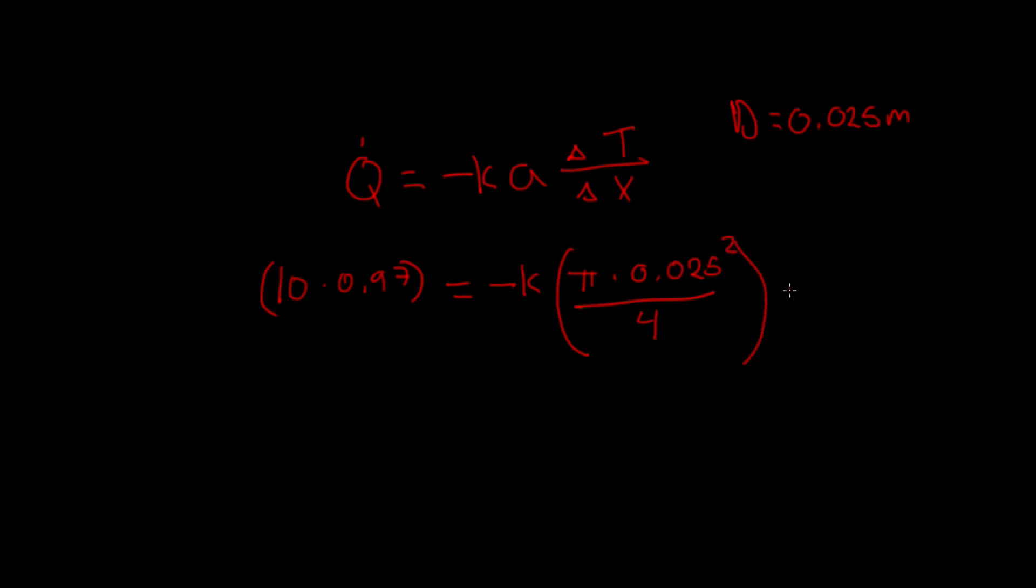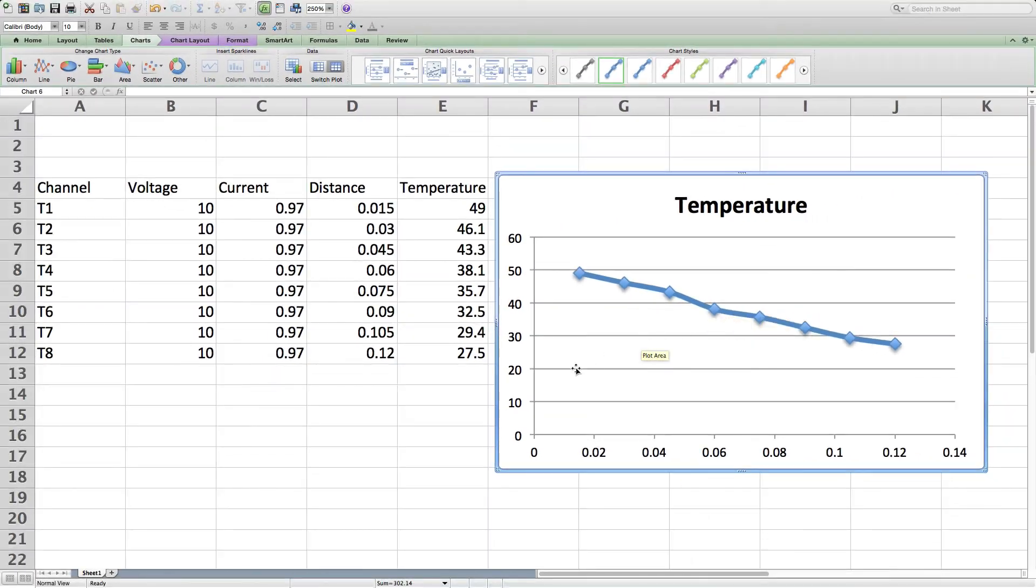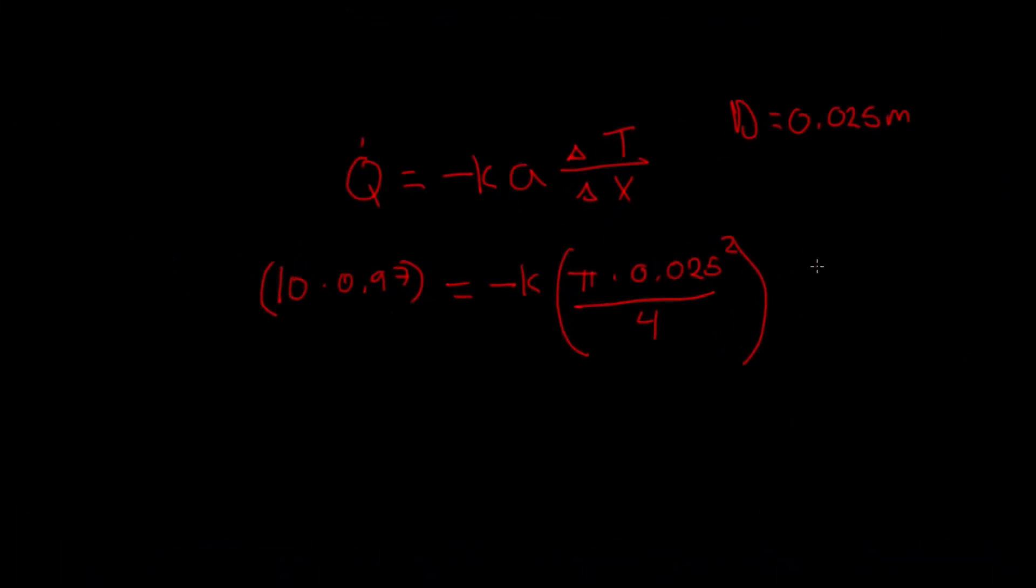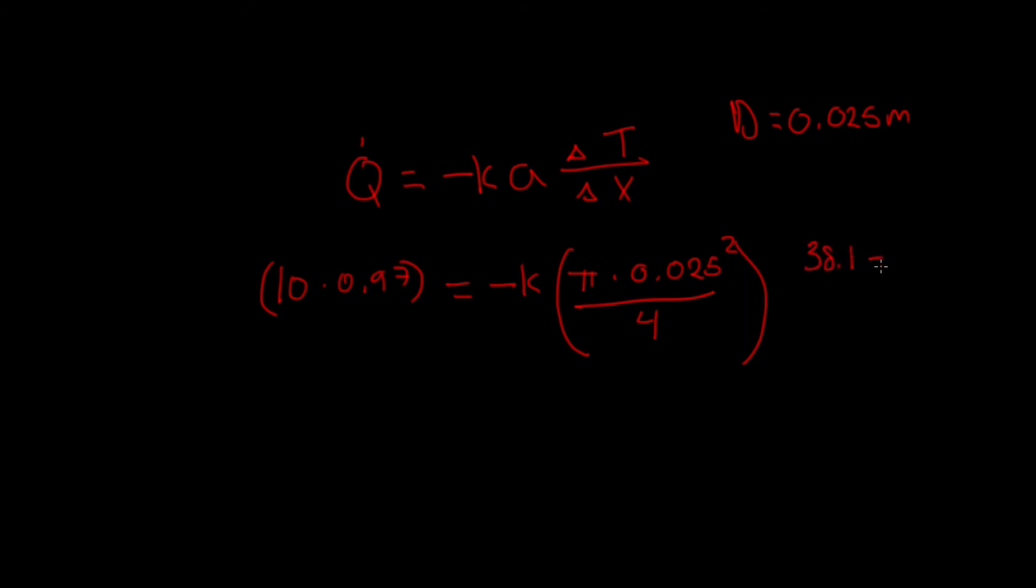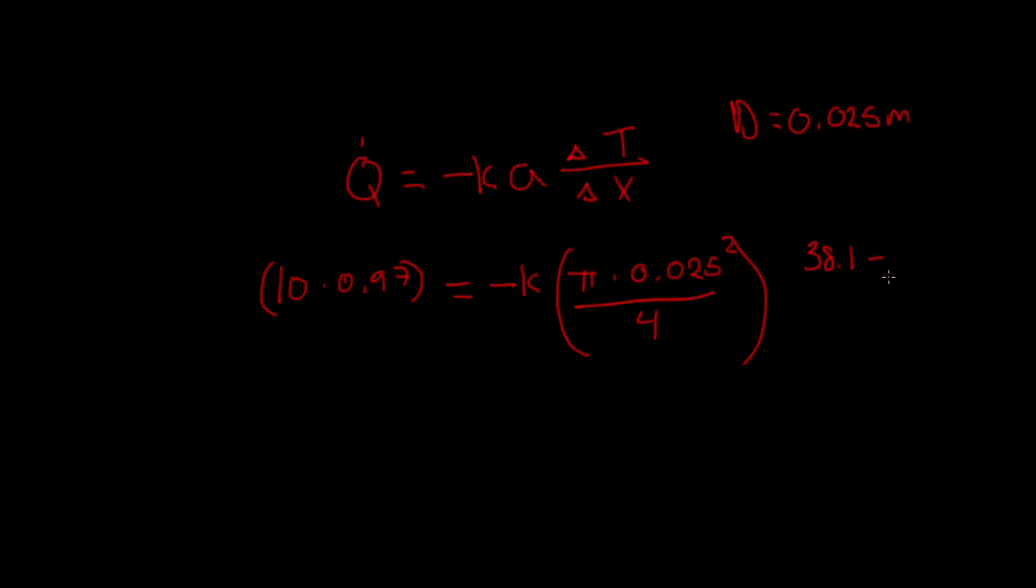Delta t, since this is a linear relationship, we can use any two data points. So let's use t4 and t5 in this case. So t4 is 38.1, so we have 38.1 minus 35.7.